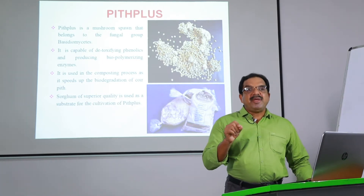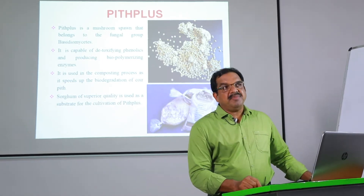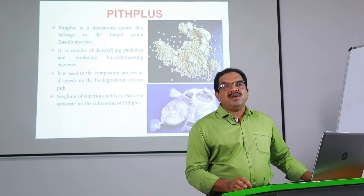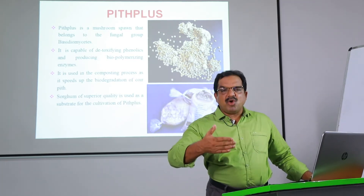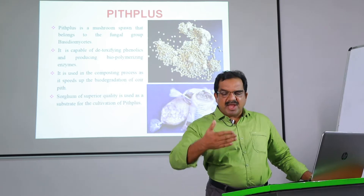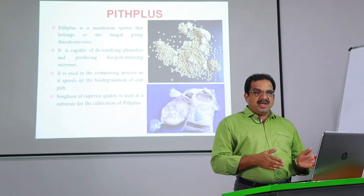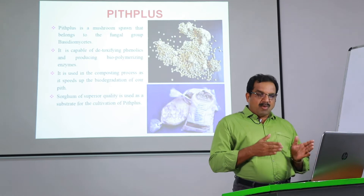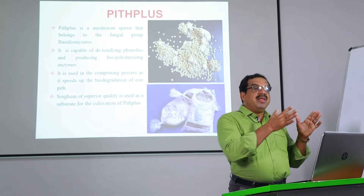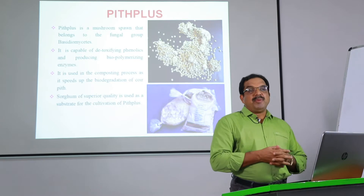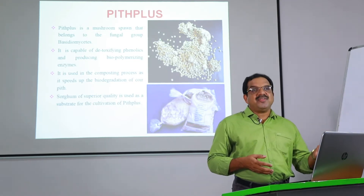Coir pith basically contains around 30% lignin, 26% cellulose, and apart from this there are many micro elements and trace elements. The lignin present in the coir pith needs to be degraded, otherwise it will accumulate in the environment, because it is a recalcitrant.